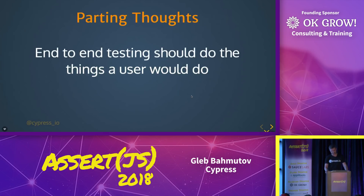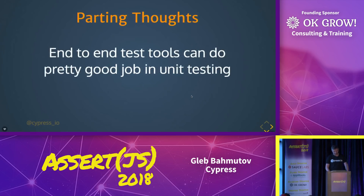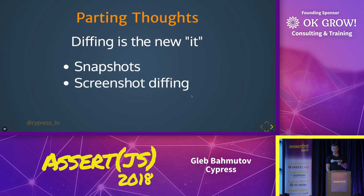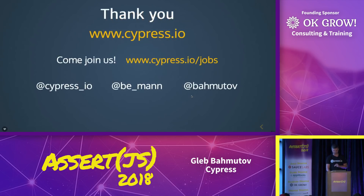I want to finish with a couple of parting thoughts. Brian showed how we think about end-to-end testing. To us, end-to-end should do the same things that a human user would do to a fully deployed system — that means real browsers, real interaction, no shortcuts, and a little bit of stubbing is okay. End-to-end tools can come down and be really useful for component-level testing. The future will be seeing your component live and having tests at that level. And finally, diffing — snapshot diffing — is the new it. Snapshot testing is great. Screenshot diffing is becoming mainstream. But I think test behavior diffing will be the next big thing. Thank you.